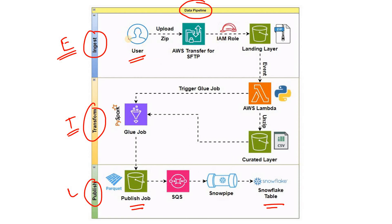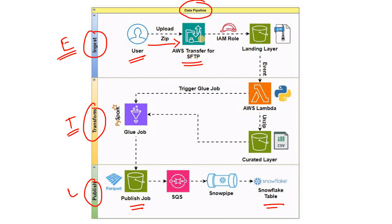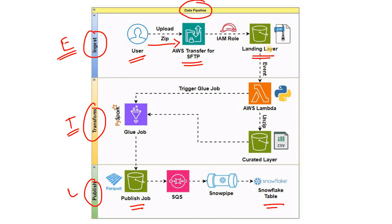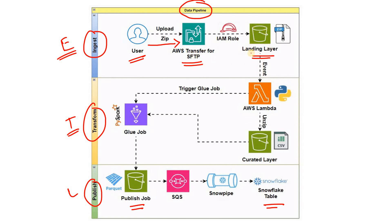Here we have a user — consider them as a third-party partner or vendor company — who are sending zip files to a SFTP location. For this pipeline, we are going to use AWS Transfer for SFTP, whose backend will be S3. We use S3 instead of EFS because S3 has almost unlimited storage and we can trigger various AWS services using S3 event notifications. This is the landing layer where data is landed from the external company in raw format — a zip file.